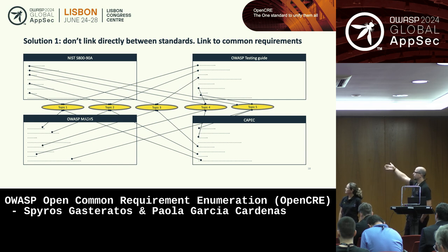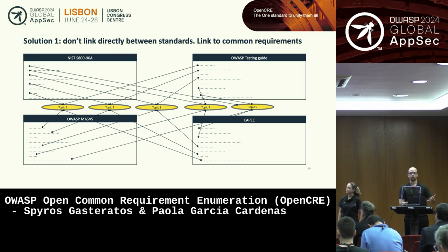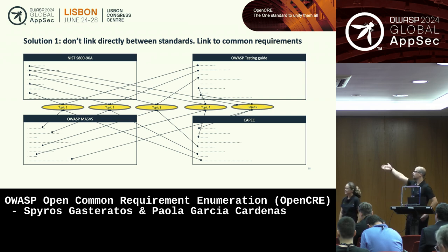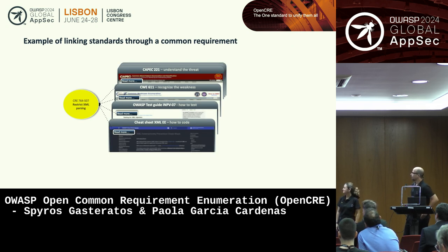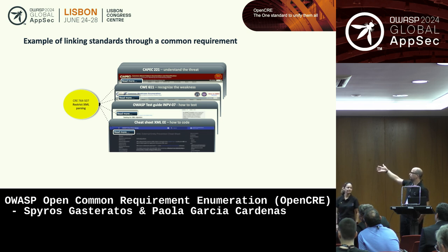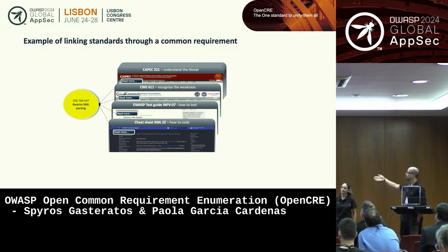We solved that by creating CREs — common IDs that describe a cybersecurity concept, something like XML security or XXE — and link everything to an internal concept. Instead of spaghetti, you end up with a graph. We like graphs; graphs we can work with. For example, you have CAPEC, CWE, Testing Guide, and CCSS that all describe the same thing — XML security — so you link them to the relevant CRE titled 'restrict XML parsing'.